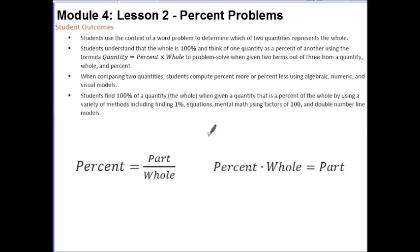Your outcomes for today's lesson are students use the context of a word problem to determine which of the two quantities represents the whole. Students understand that the whole is 100% and think of one quantity as a percent of another using the formula quantity equals percent times whole to problem solve when given two terms out of the three from a quantity, whole, and percent.